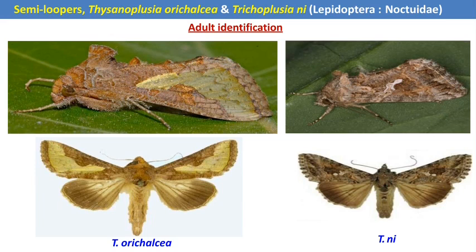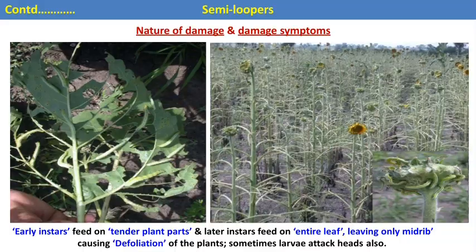The next pest is the semilooper. There are two different species of semilooper. The moth lays eggs on the surface of the leaves of the sunflower crop. The larvae emerge out, called loopers or semilooper larvae, because during walking they form a half loop — hence the name semilooper. The early instar larvae feed on tender plant parts; later instar larvae feed on entire leaves, leaving only the mid-rib, causing defoliation. In severe infestation, it also attacks the heads, causing severe yield loss.